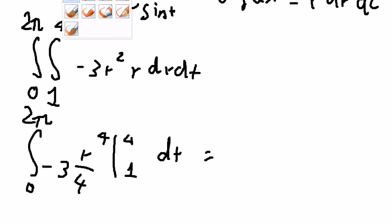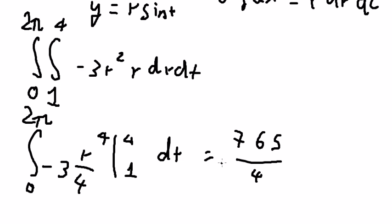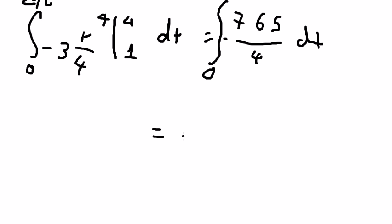So we got 765 over 4 with the negative, and we have the integral from 0 to 2π dt. And this one you got the final answer.